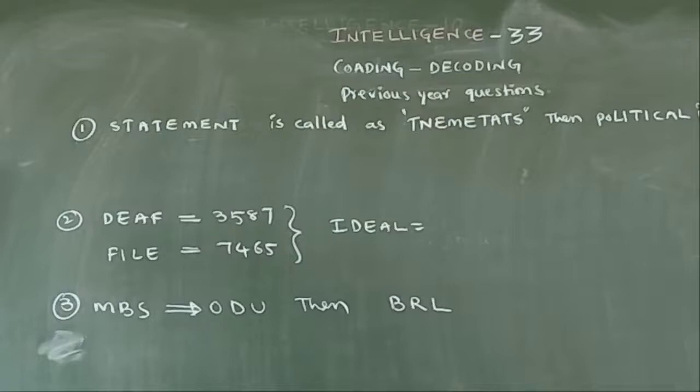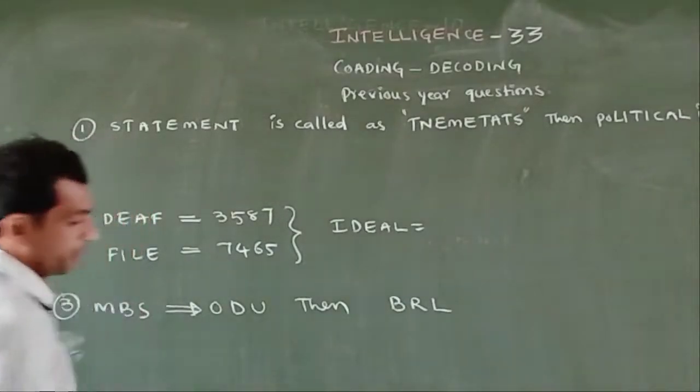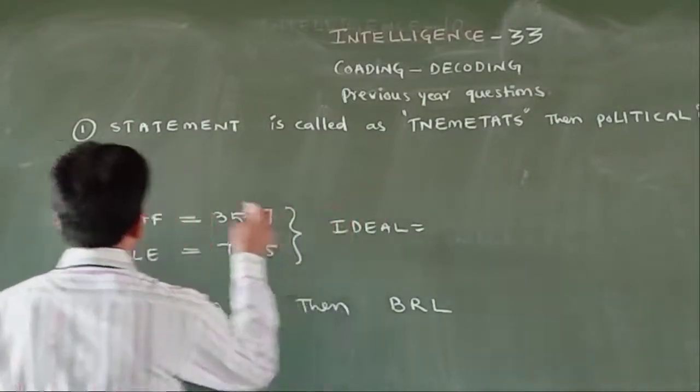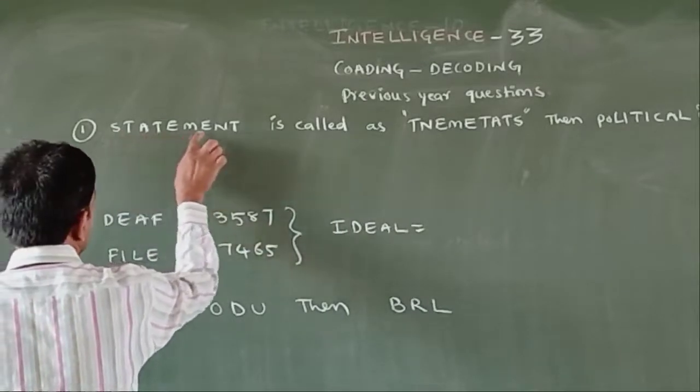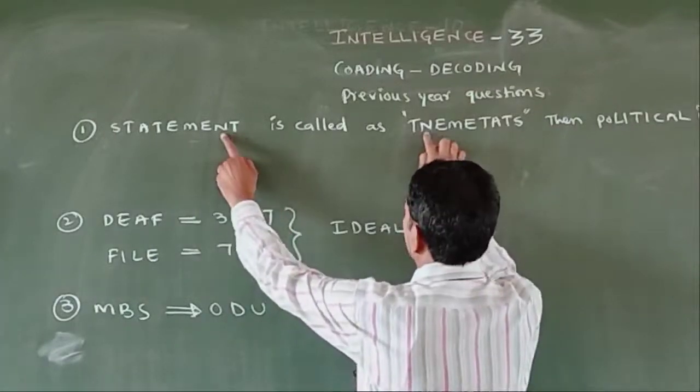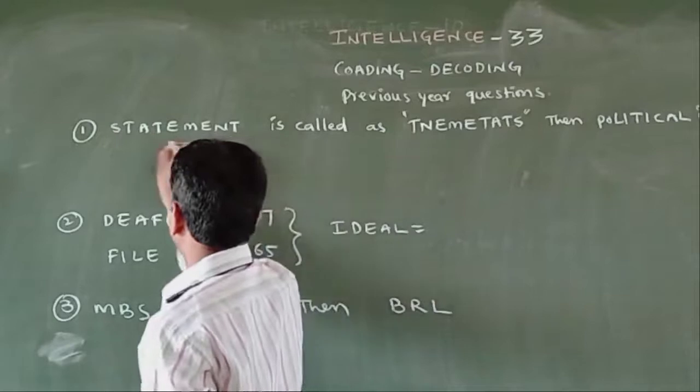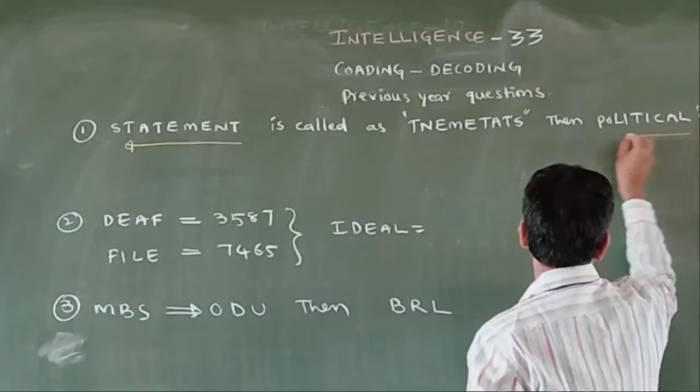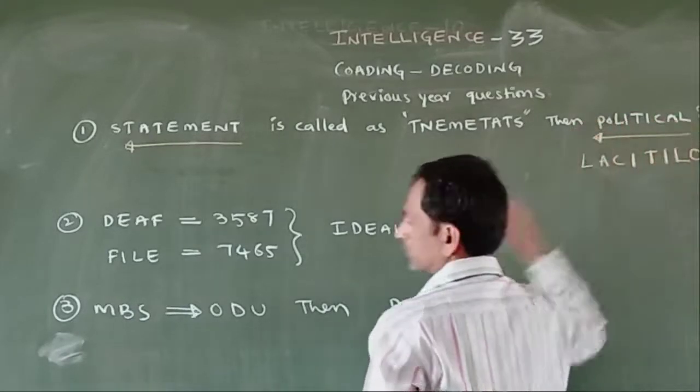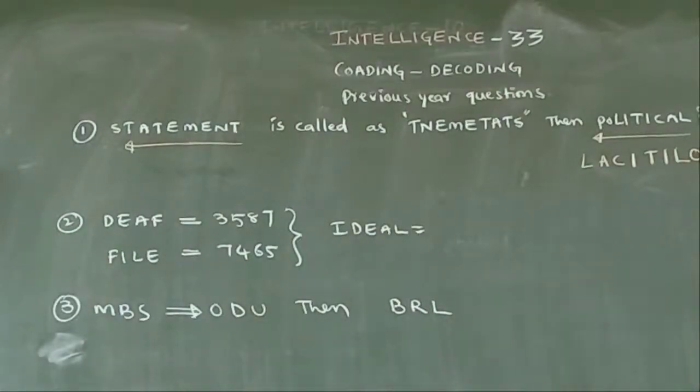We have a statement. The statement is converted into TNEMETATS. It is written in reverse order. So political in reverse order is LACITILOP.